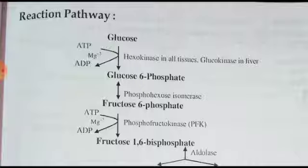Glucose obtained from food enters the cell and undergoes metabolism to derive energy. Step 1: glucose is converted to glucose-6-phosphate. The phosphate is added by ATP — ATP is converted to ADP (adenosine triphosphate to adenosine diphosphate), and that one phosphate is attached to the sixth carbon of glucose with the help of the enzyme hexokinase.